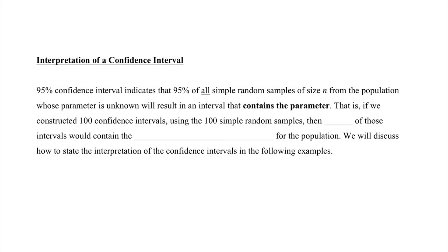And finally, the last part of this introduction has to do with the interpretation of a confidence interval. Remember, a 95% confidence interval indicates that 95% of all simple random samples of size n from the population whose parameter is unknown will result in an interval that contains the parameter. It's tough to process that of all of this, we still don't know what the parameter is. That is, if we constructed 100 confidence intervals using 100 simple random samples, then 95 of those intervals would contain the true value for the population. We'll discuss how to state the interpretation of the confidence intervals with our examples.